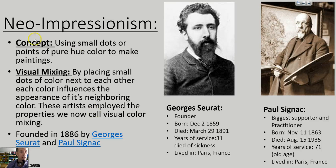The concept of neo-impressionism was to use small dots or points of pure hue color to make paintings. In the past, artists mostly used their palettes to mix the color and then apply it to the painting in one larger track of paint.